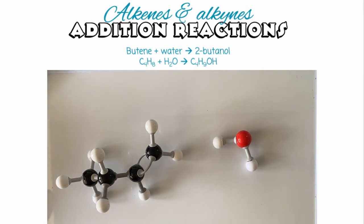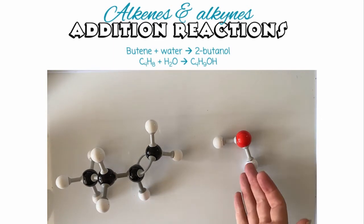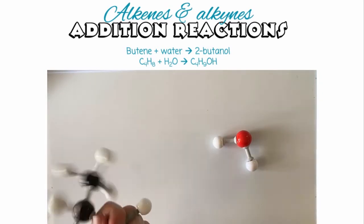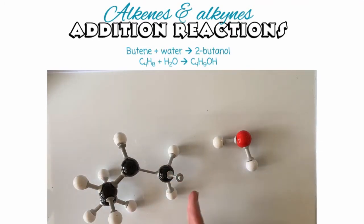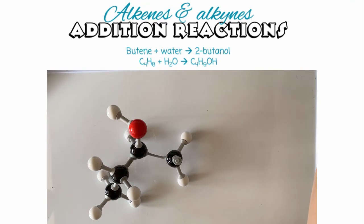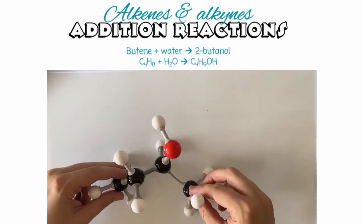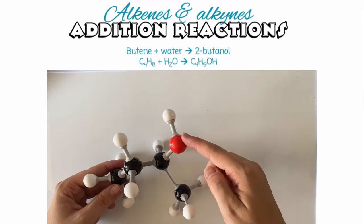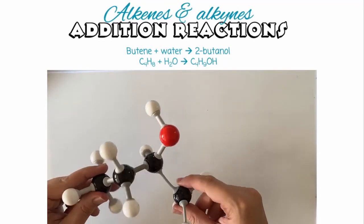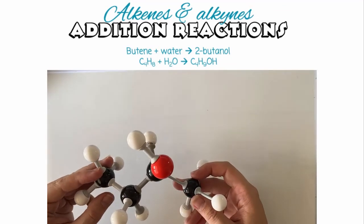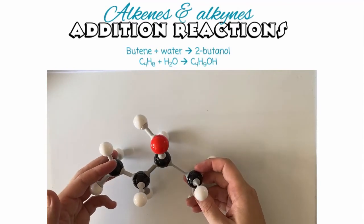Our last example is the reaction of our alkene with water — this is called hydration. We're hydrating the molecule with water. Again, same as all the others, the double bond breaks, and this double bond breaking allows for an OH to attach and the hydrogen to attach. So now we have an alcohol: we have 2-butanol. It's an alcohol because of the OH functional group, due to the hydration of the butene molecule.